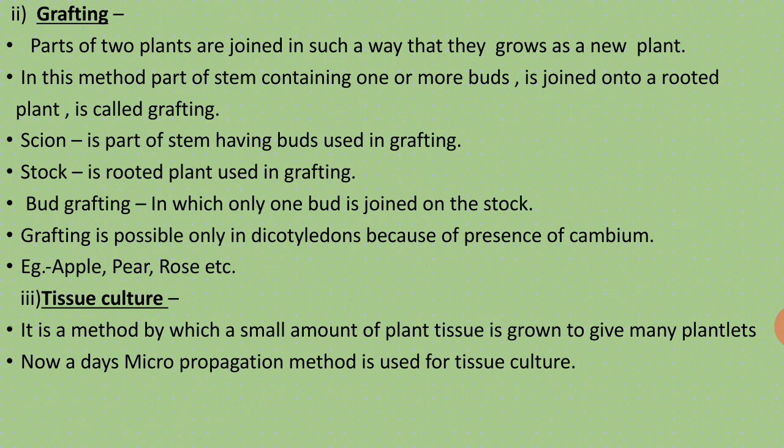The third artificial method is tissue culture. In this method, a small amount of plant tissue is grown to give many new plant leads. A small part of a plant is taken, cut into small tissue pieces, and grown on a particular culture medium. From a small plant tissue, a number of similar new plants can be obtained. That method is known as tissue culture — tissue is cultured on a culture medium and from one small tissue, a number of similar plants are obtained.